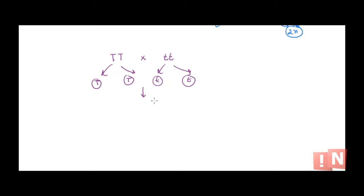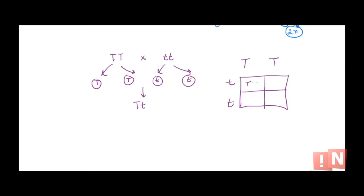Once these gametes are fused, you can have only one type of combination: capital T and small t. In the Punnett square, gametes from the tall plant and the dwarf plant give us only one combination — Tt. So this is what we get in the F1 generation. As per the law of dominance, capital T (tall trait) is dominant over dwarf, so all plants in the F1 generation are tall.